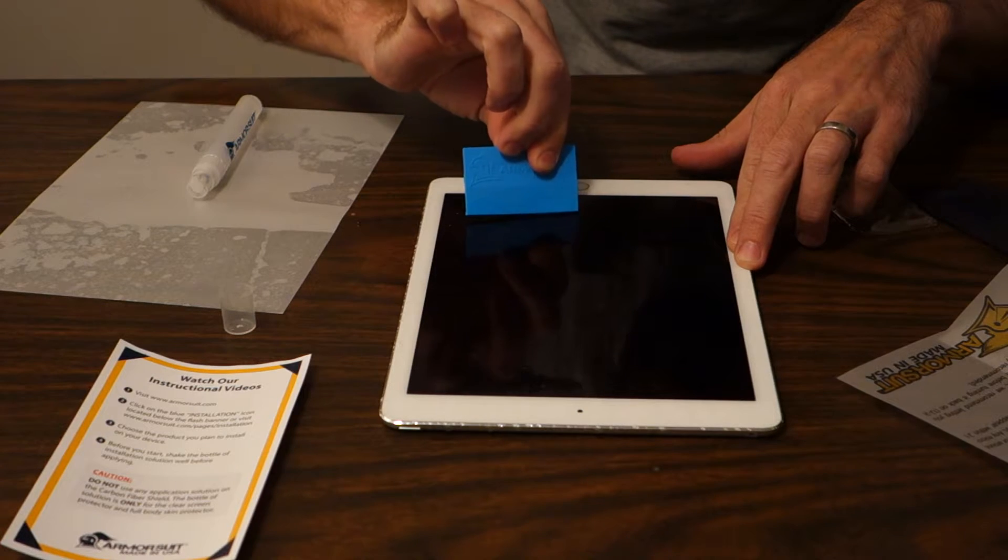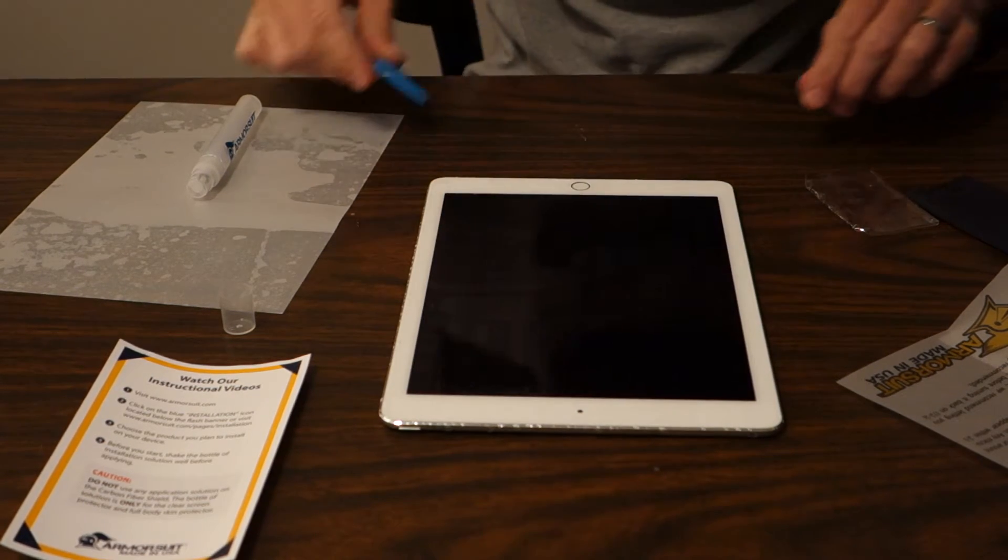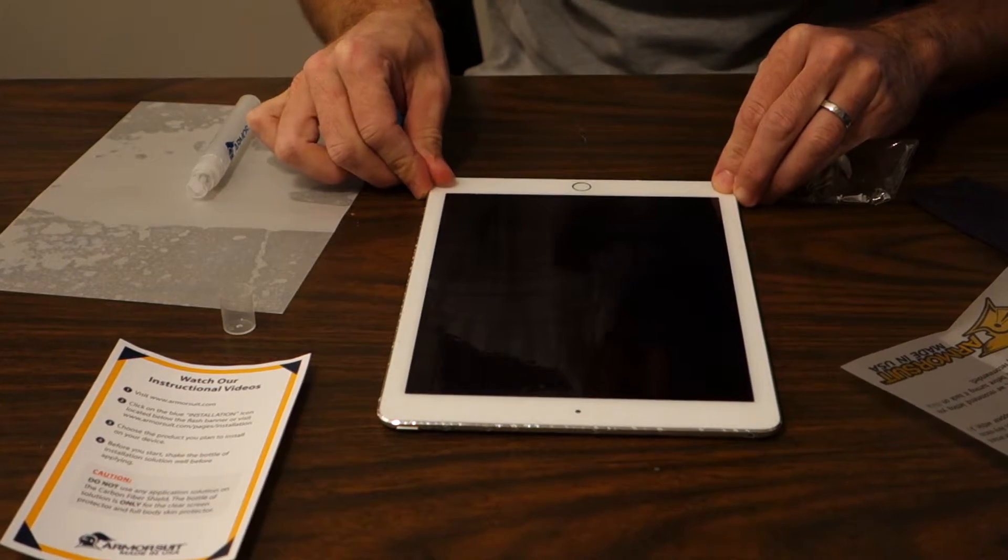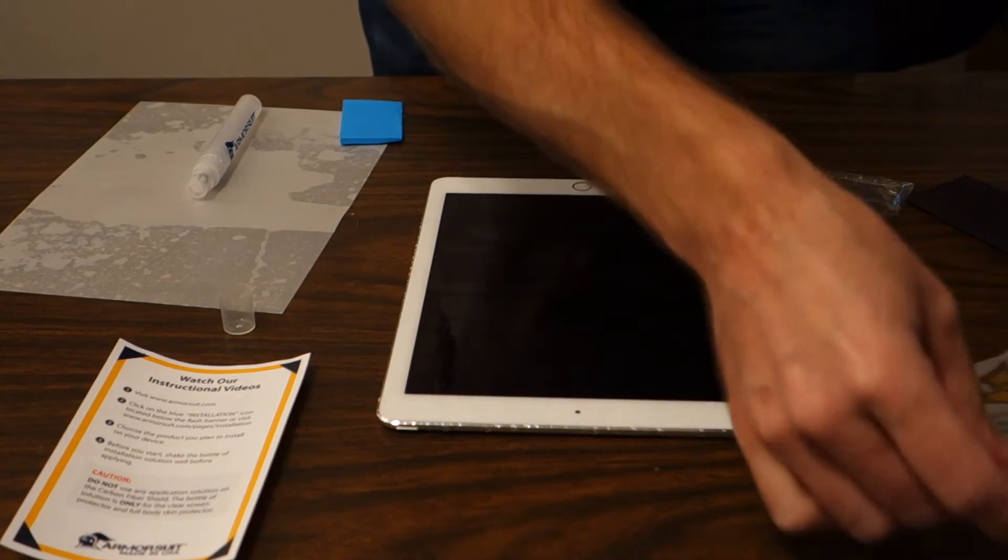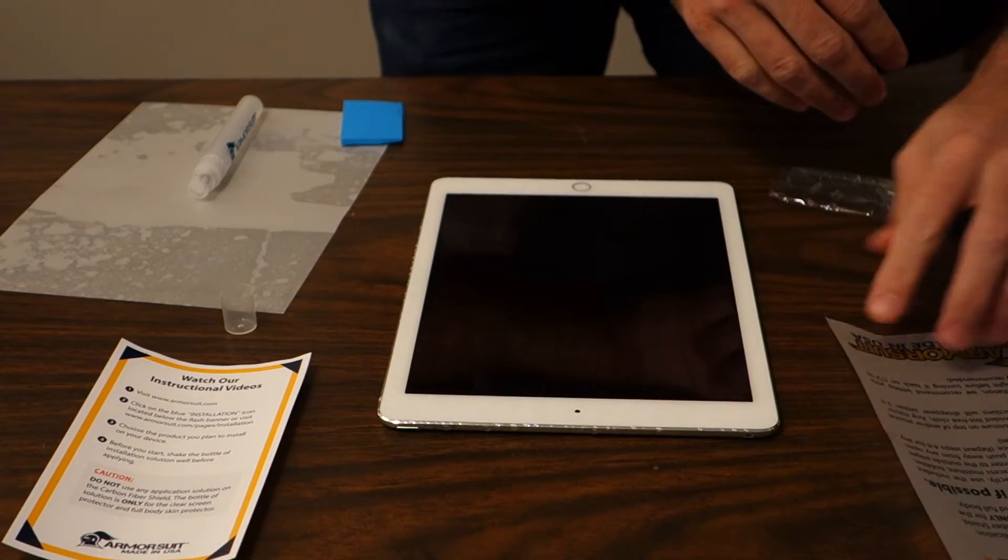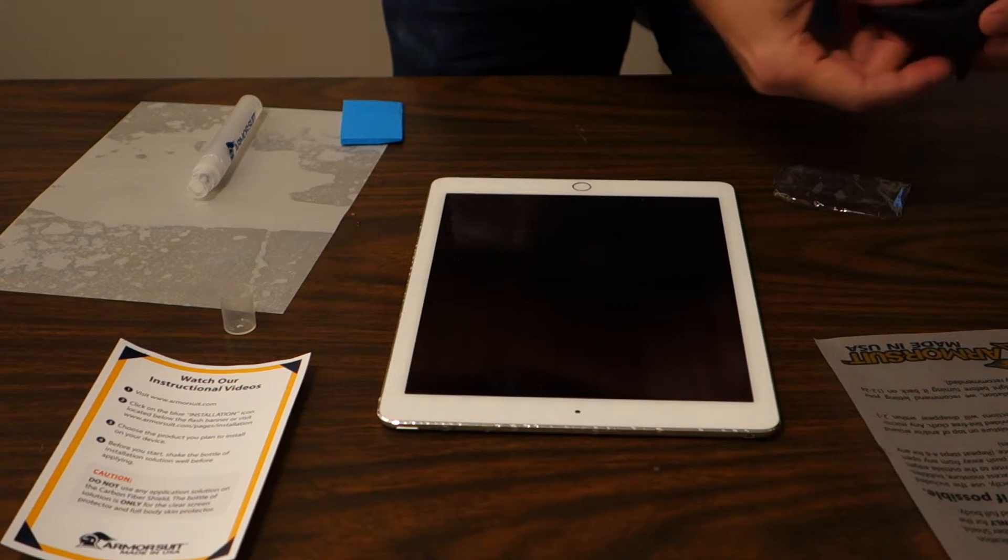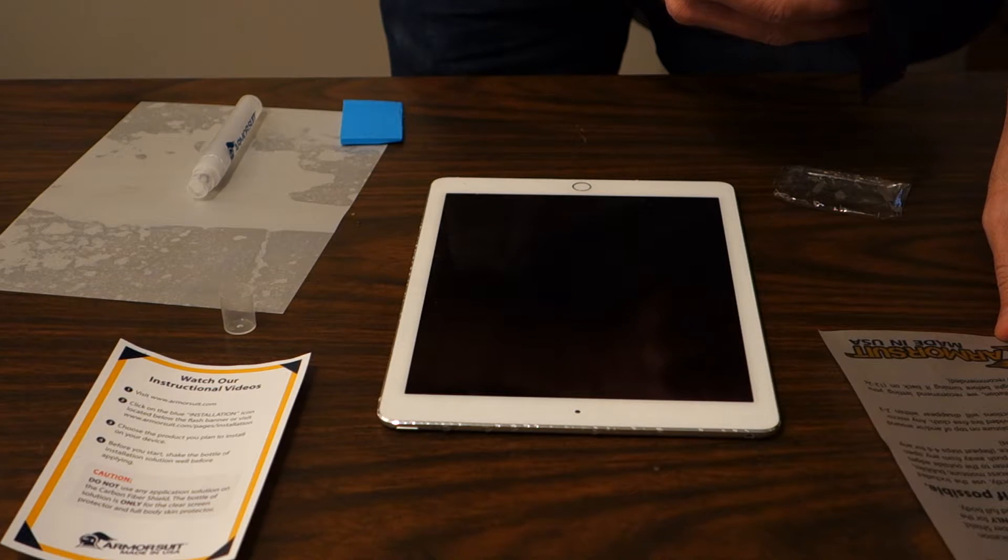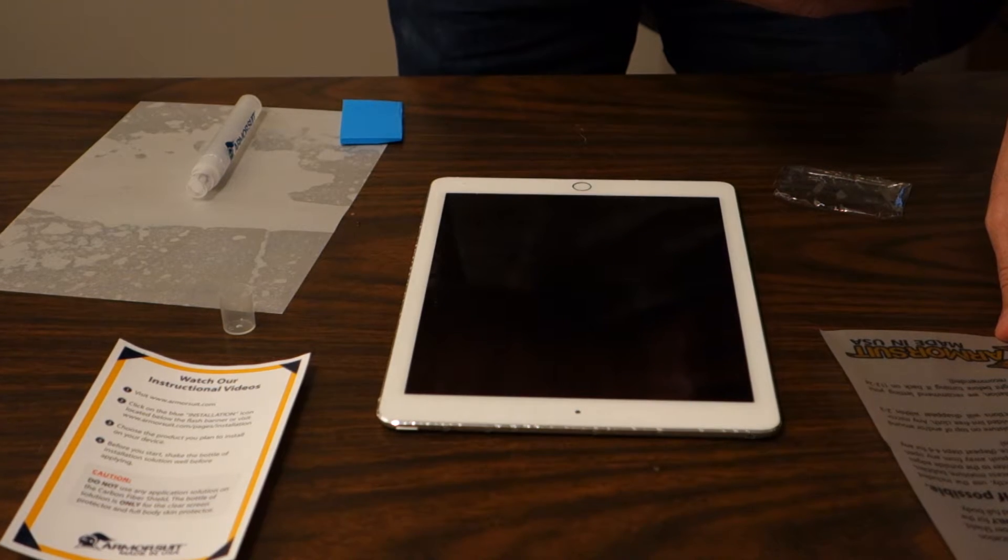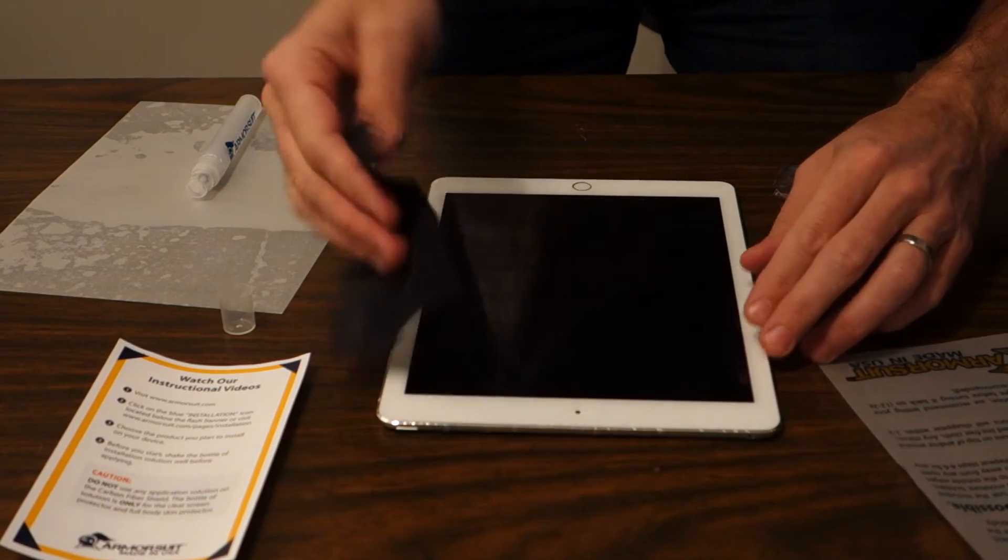I can't tell if I've got any bubbles in there or not. It's still a little white on top. I think I was supposed to soak up any excess. After aligning, use the installation card, push excess moisture to the edges, push away from any open ports on the device. So I probably should have done that.